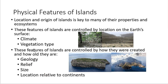The features of islands controlled by how they were created and how old they are include geology, relief or topography, size of the island, and the location relative to continents. Islands can be formed in different ways, and depending on how they are formed — mostly through some sort of geologic process — these factors will be determined.